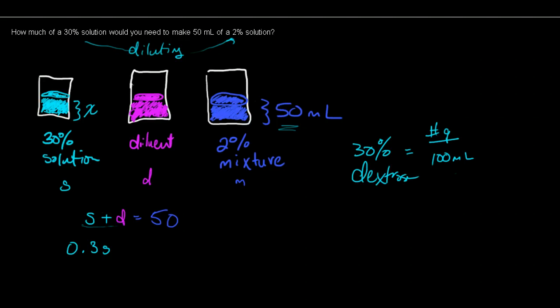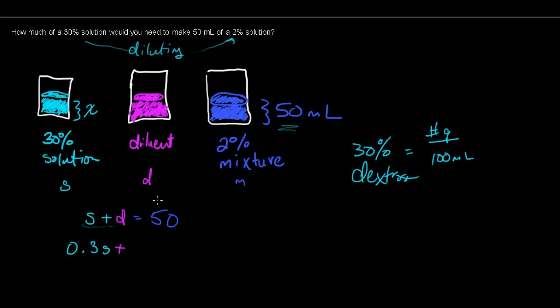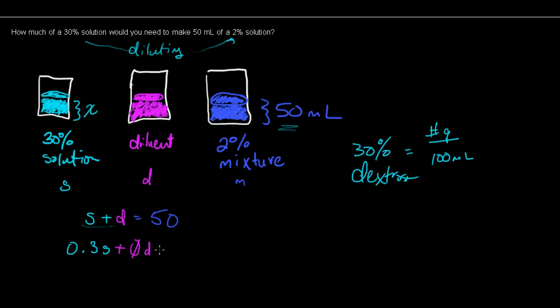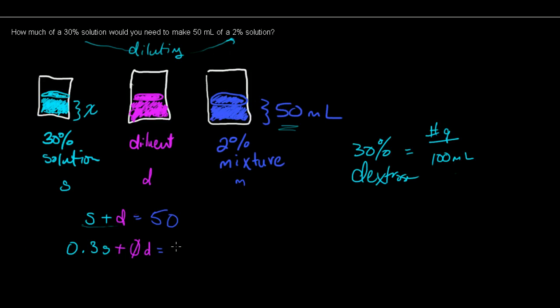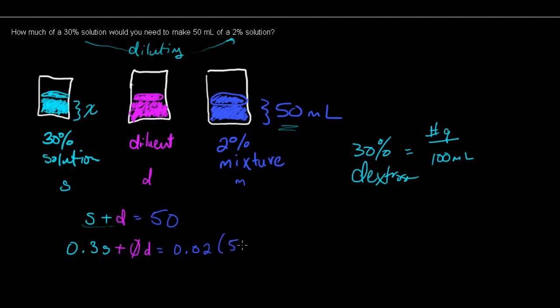And here's where things get a little bit interesting. I am diluting down by using a diluent that doesn't have any dextrose in it. So there is absolutely no dextrose. I have 0D in my diluent and I know that I'm going to mix it down to 0.02, that's percentage wise, of my 50 milliliters.